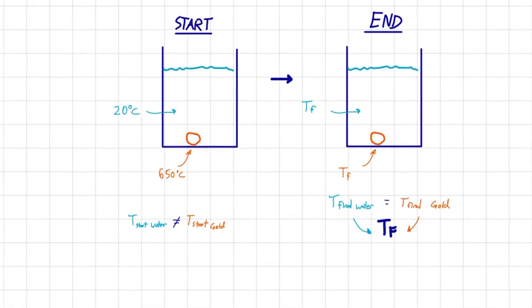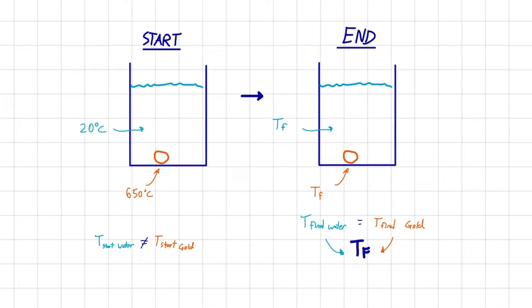Here is a drawing of what's happening. At the start, we have the water at 20 degrees Celsius and our piece of gold at 650 degrees Celsius — so the temperature of water does not equal the temperature of gold at the start. But after some time has passed, eventually the final temperature of the water and the final temperature of the gold are going to be the same. That is our Tf.